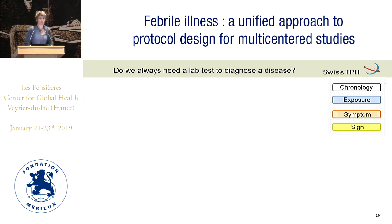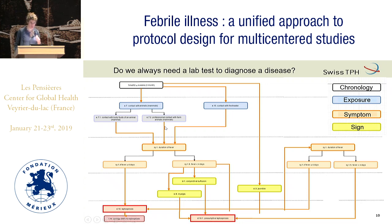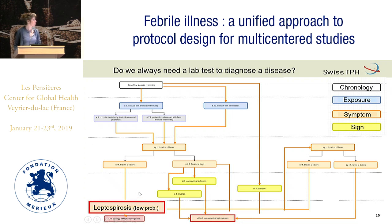That's what we do for travelers — we don't test all travelers systematically for rickettsia or leptospira. We combine clinical predictors. The algorithm we use for travelers combines chronology, exposure — did they have contact with fresh water or animals? — duration of fever, symptoms, and signs like conjunctival suffusion, myalgia, and jaundice. We combine all these to calculate the probability of leptospirosis.